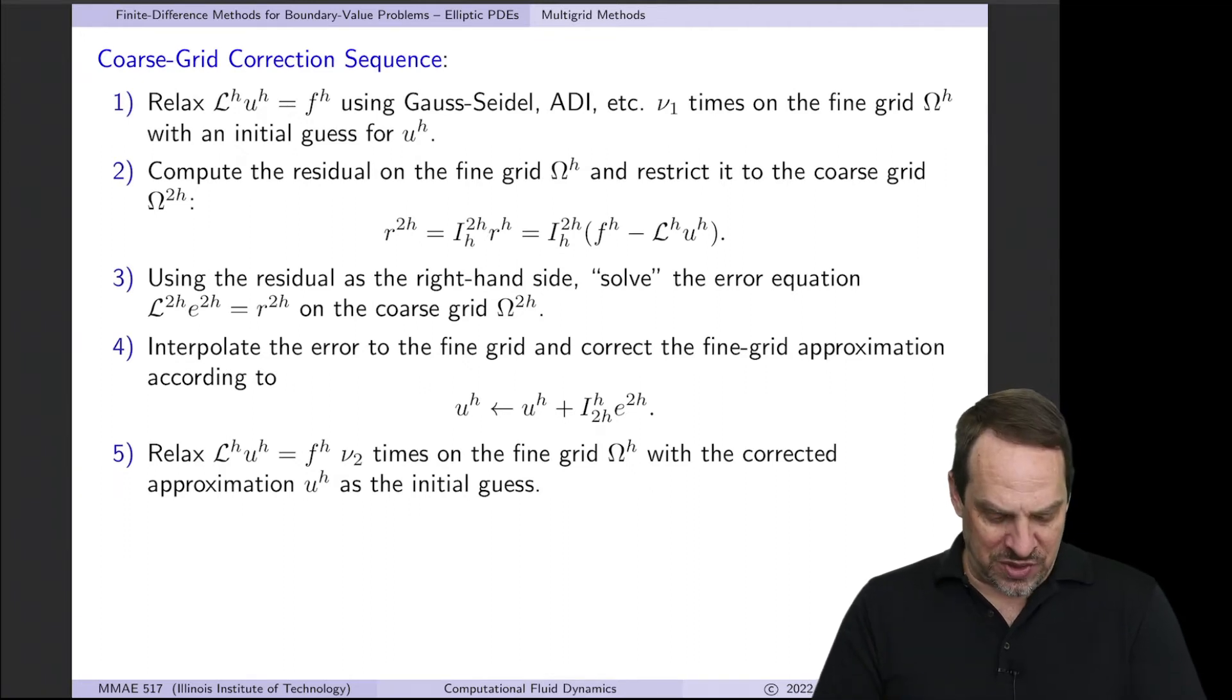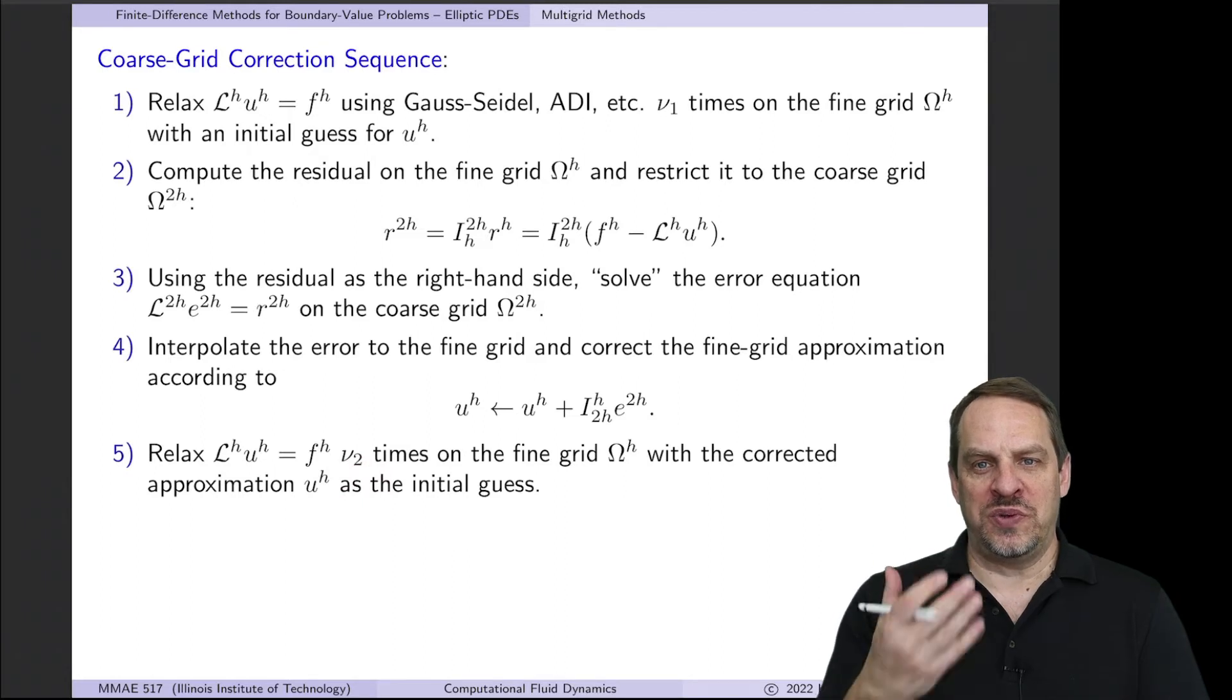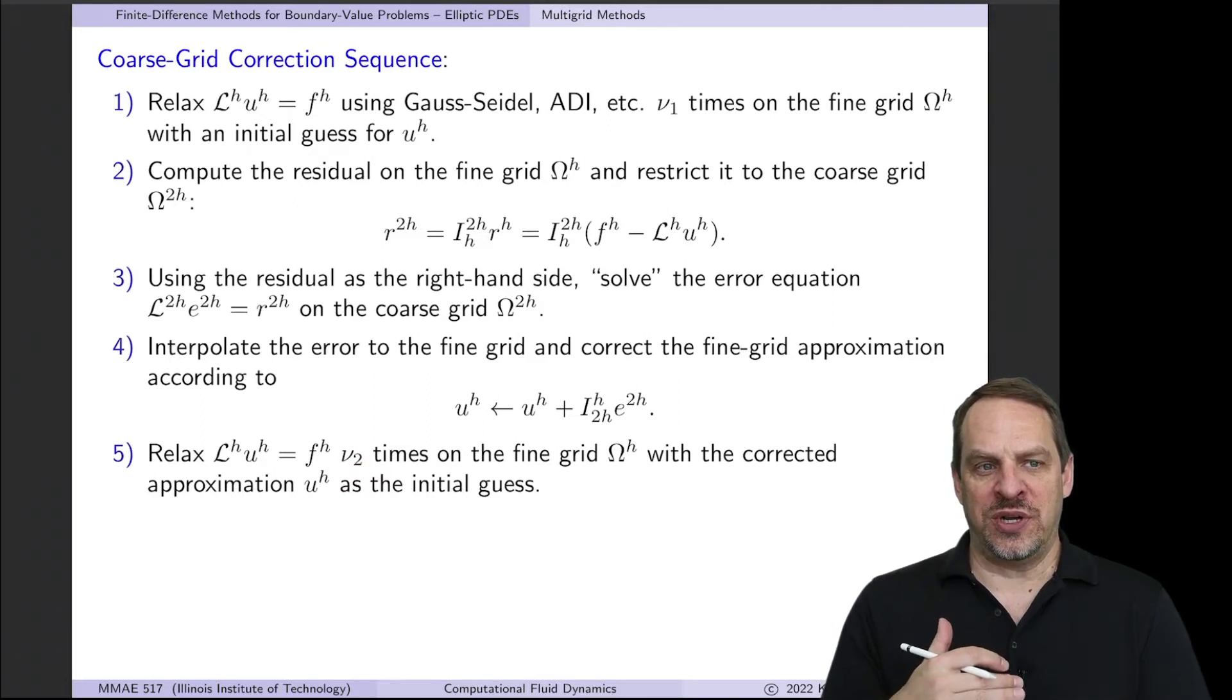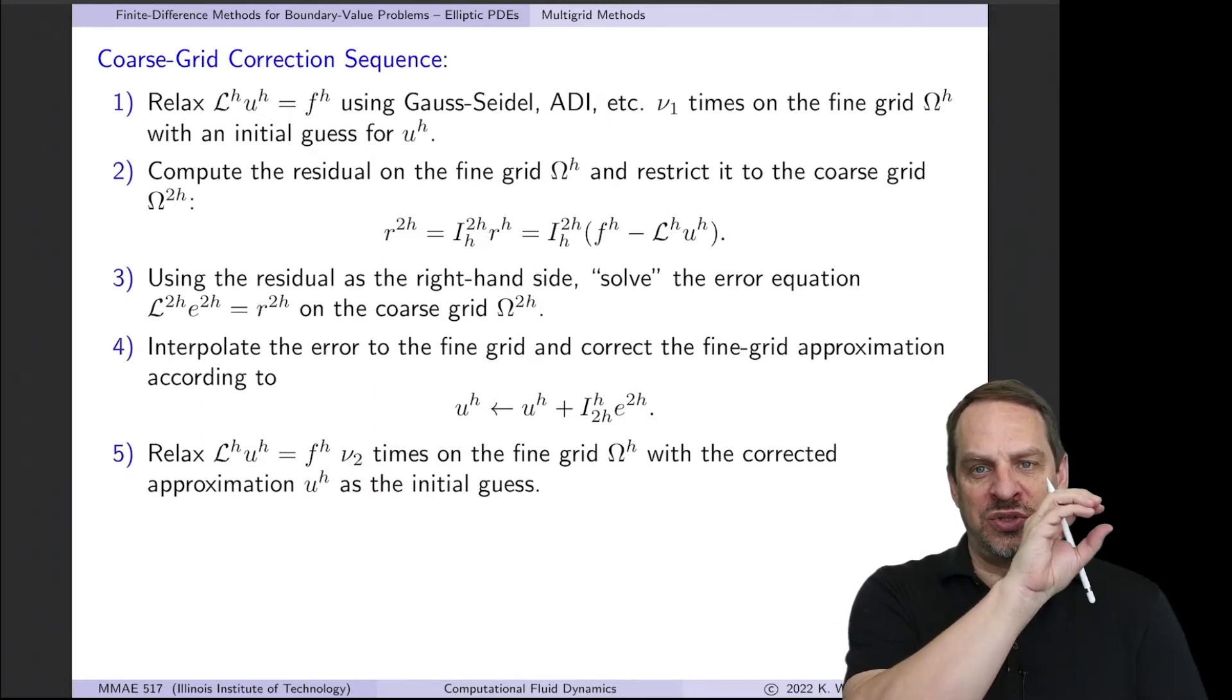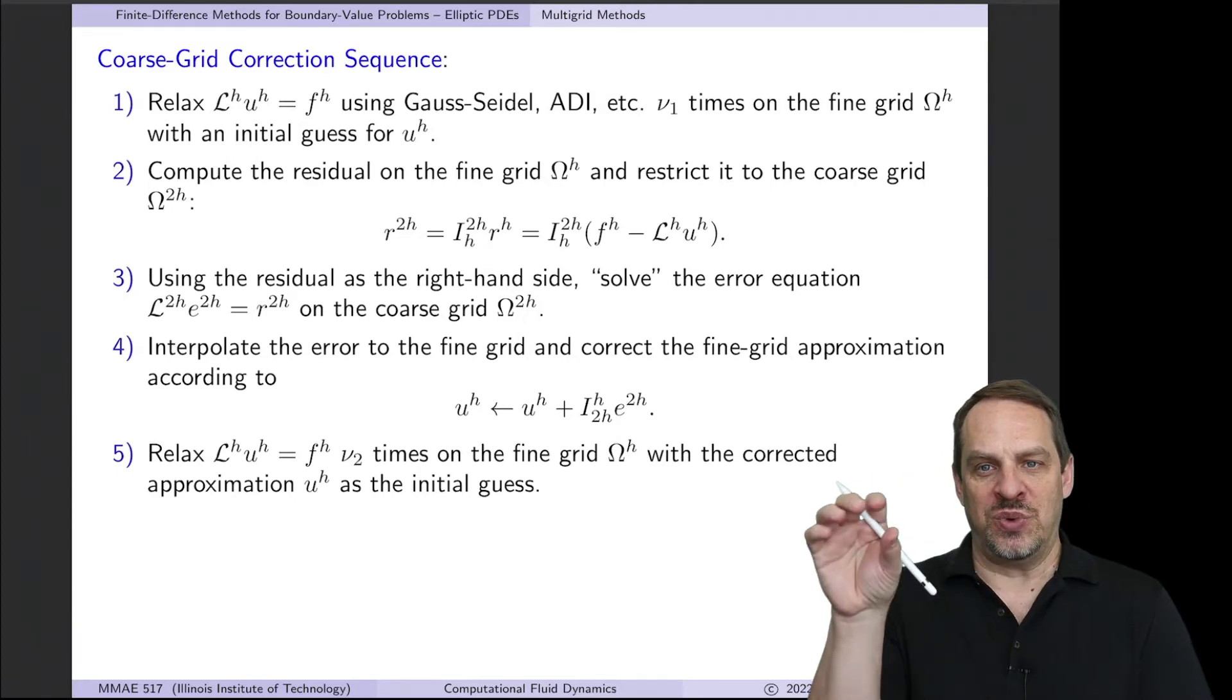Finally, we'll relax again on the original difference equation Lu=F on the fine grid, and we'll do that ν_2 times. Once we've completed these steps in the coarse grid correction, we should have a better approximation for the solution U than we had when we started.